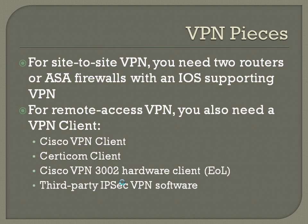For site-to-site VPN, you need two routers or ASA firewalls with an IOS supporting VPN — not all IOS versions support encryption and VPN. For remote access VPN, you're also going to need a VPN client — something installed on a laptop or PC. Cisco offers its own Cisco VPN client software, and there's also a Cisco VPN 3002 hardware client, but that's end of life. You can also use a Certicom client, which is a kind of open-use generic IPsec VPN software client, or another third-party client — though you'll be limited by what that vendor offers as far as compatibility with Cisco. IPsec is a fairly open standard, so they're generally going to be well in line with each other.